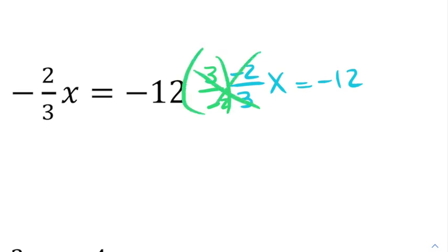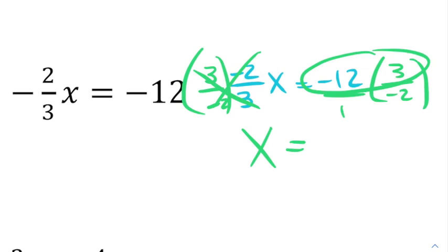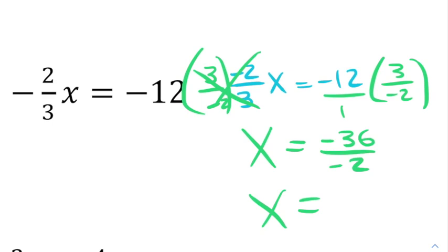So this will cancel out. And whatever I did to the left, I'll do to the right. So I'm going to put a 3 over negative 2 here. I'm going to be left with x on the left-hand side. And on the right-hand side, I'm going to do multiplication of fractions. I'm going to put a 1 below the 12 and do negative 12 times 3, which is negative 36, and 1 times negative 2, which is negative 2. And then when I do the division of negative 36 divided by negative 2, I get an answer of 18.